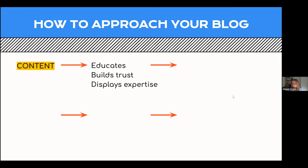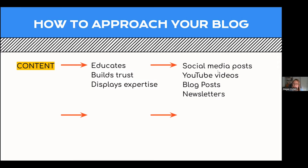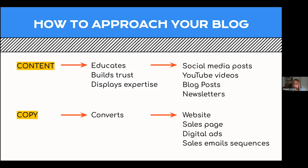Content educates, builds trust, informs, and displays expertise. Social media posts, YouTube videos, blog posts, and newsletters are all content. Copy, on the other hand, has the purpose of converting — this covers websites, sales pages, digital ads, and sales email sequences. Conversion means sales, but it also covers specific actions you want your audience to take, such as filling in a form to become a lead. So there's a slight difference between the two, and a blog falls under content.